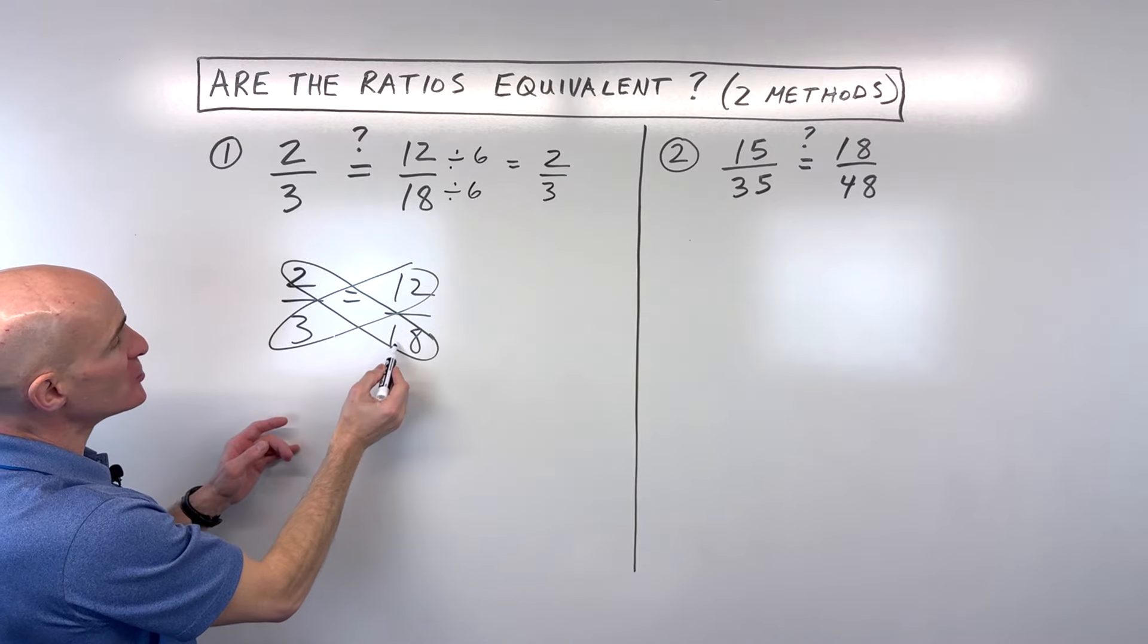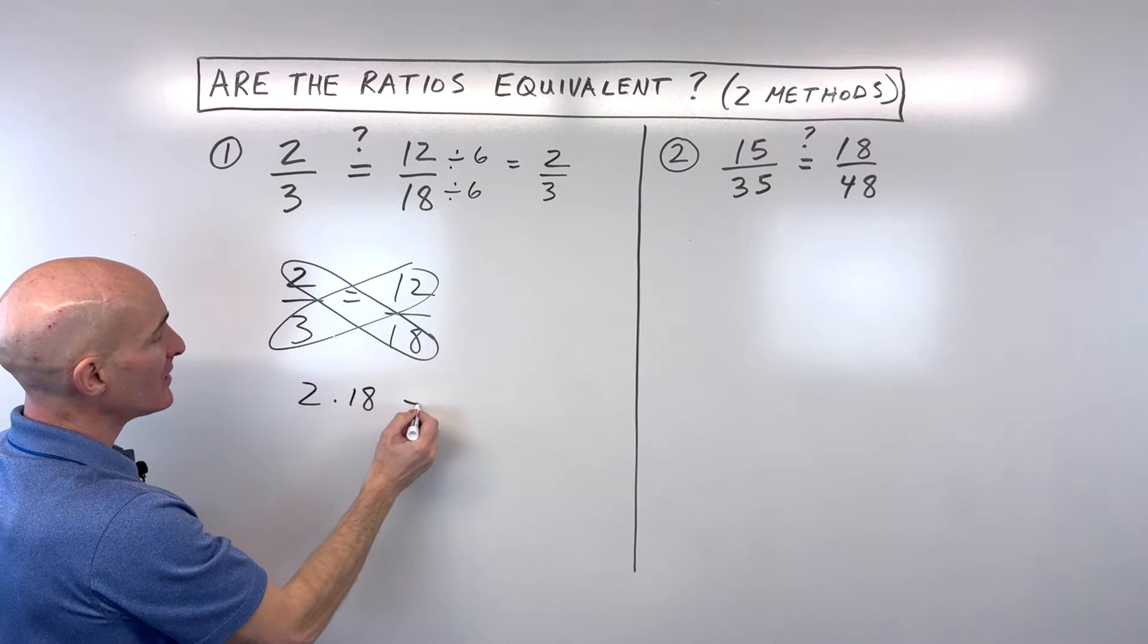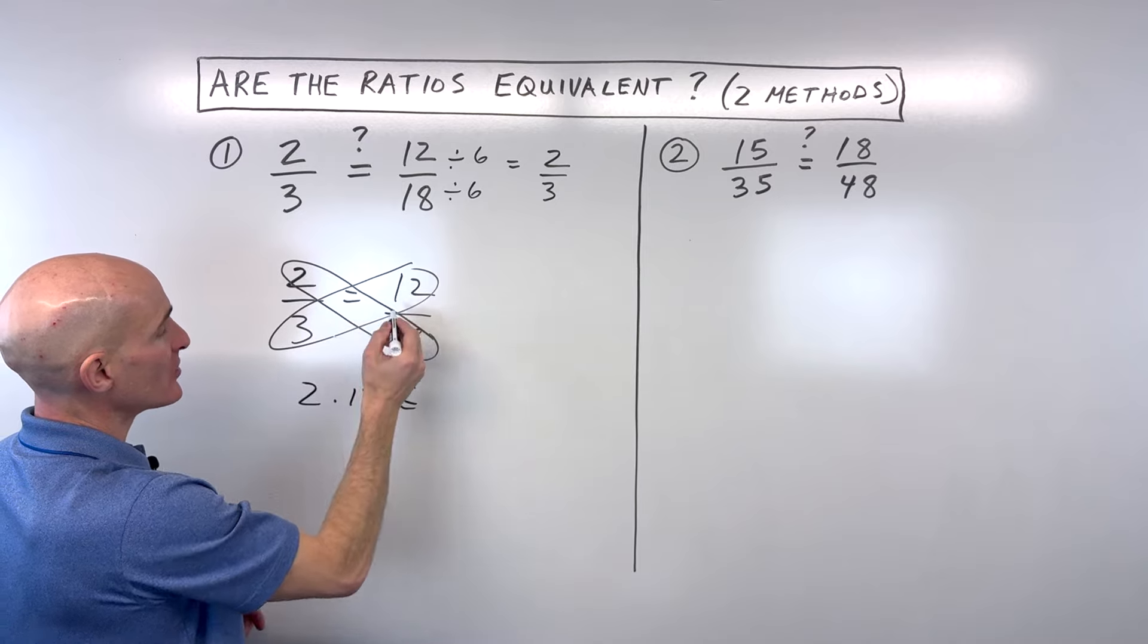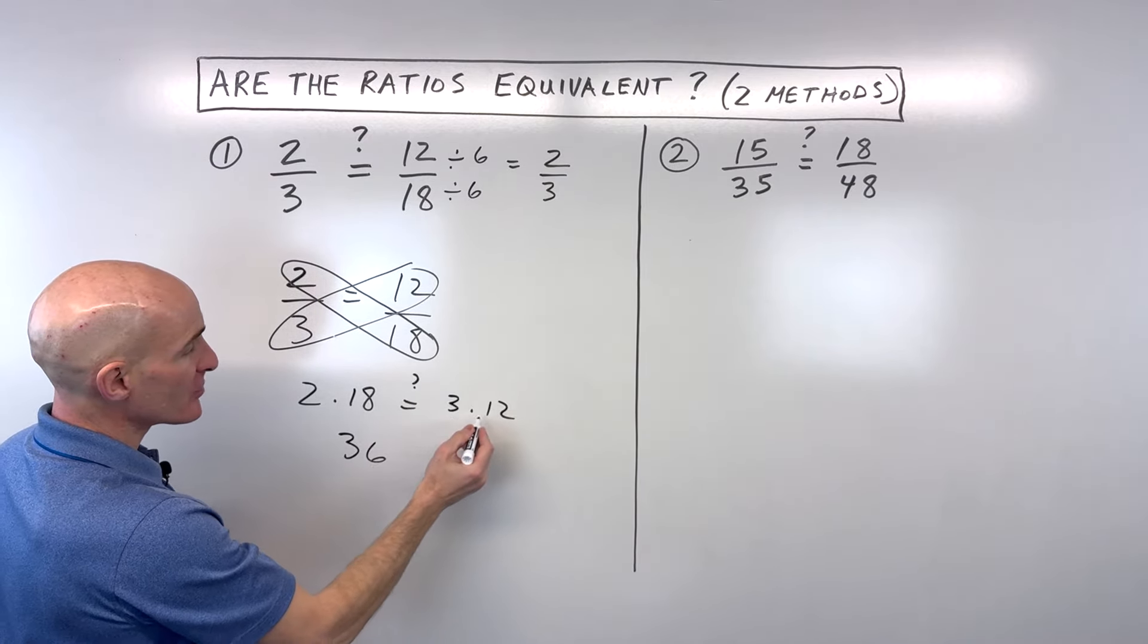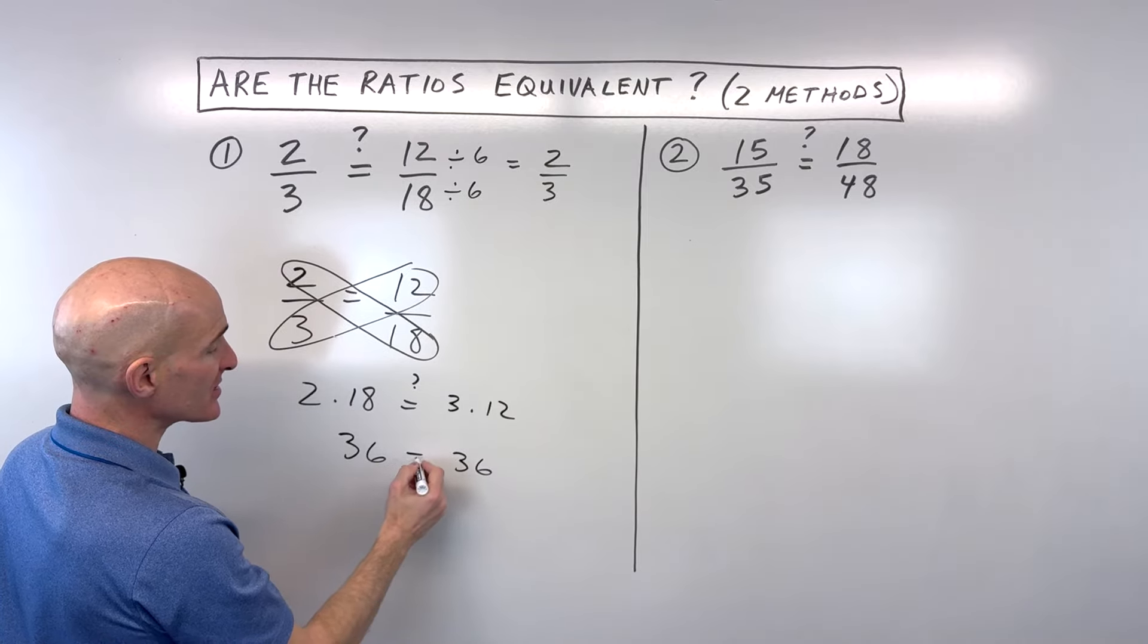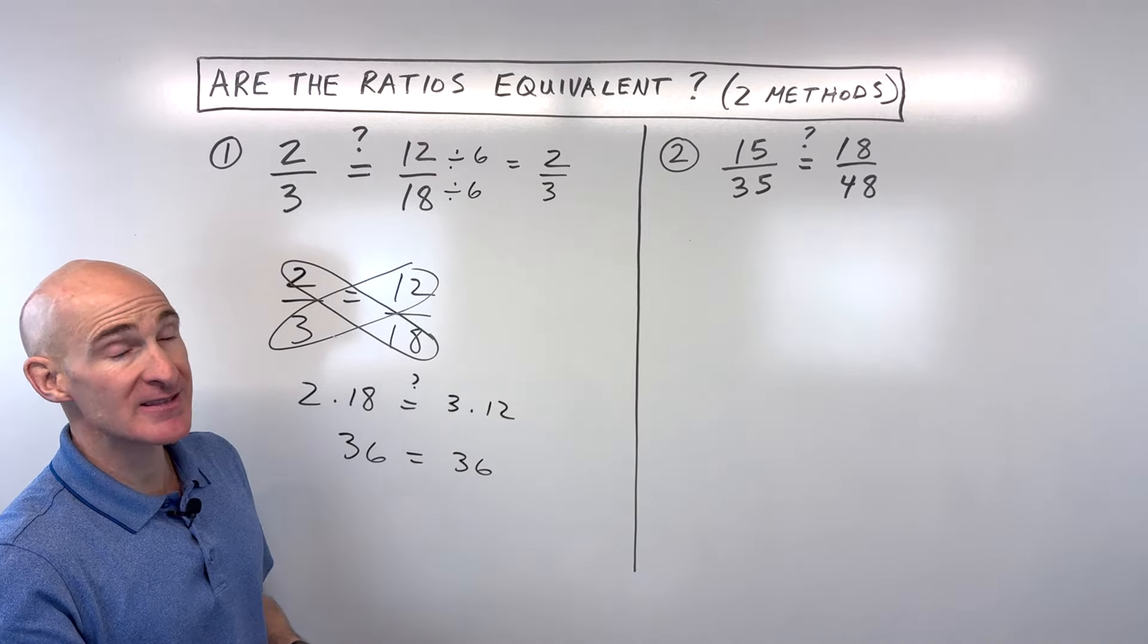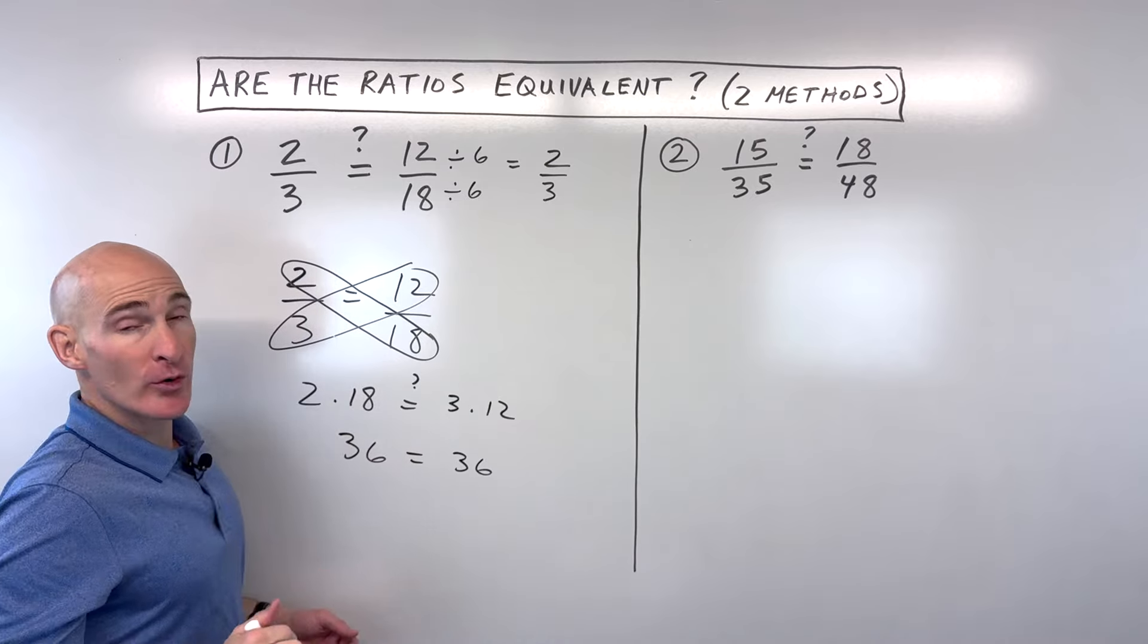So what I mean is you'd say two times 18 is that the same as three times 12. Okay, so two times 18 is 36. Three times 12 is also 36. So since this is true, that means that these two ratios are equivalent to one another.